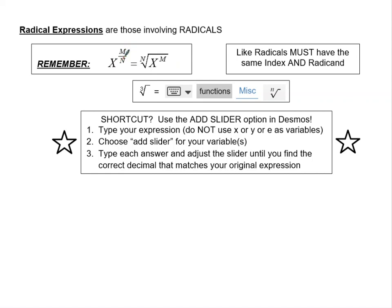The denominator of your exponent will become the index of your radical. So if you see a 2, it's a square root. If you see a 3, it's a cube root. The numerator of your exponent will become the exponent inside your radical. It's important to remember the relationship between rational exponent form and radical form.